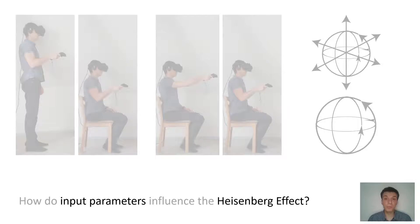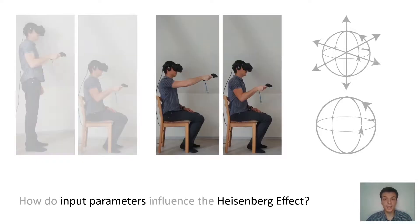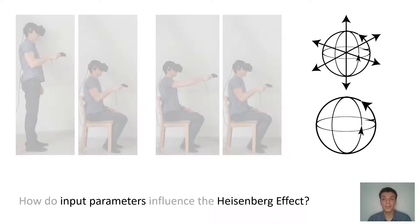We were also interested in how input parameters could influence the Heisenberg effect. To this end, we used body posture, so standing and sitting, arm posture, an extended arm and an angled arm, and the degrees of freedom, so using six degrees of freedom or three degrees of freedom.